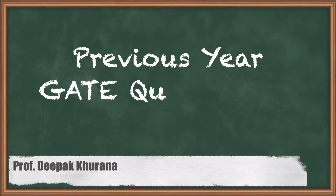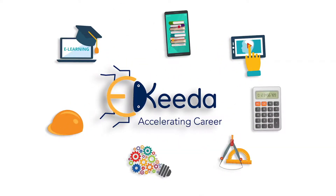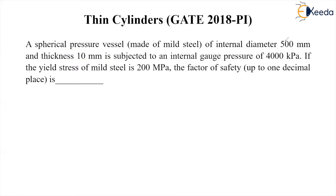Hello students, in this session let us solve a question on thin cylinders. A spherical pressure vessel made of mild steel has an internal diameter of 500 millimeters and thickness of 10 millimeters, and is subjected to an internal gauge pressure of 4000 kilopascal. If the yield stress of the mild steel is 200 megapascal, we have to find out the factor of safety.